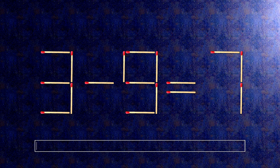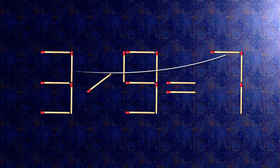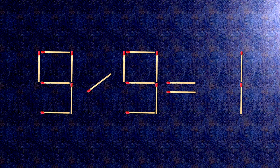Here is how this puzzle is solved. To do this, all we need to do is move this match right here and this match right here. Now when we check the condition, 9 divided by 9 is 1. The task is done and the puzzle is solved.